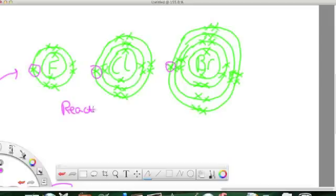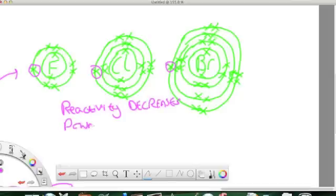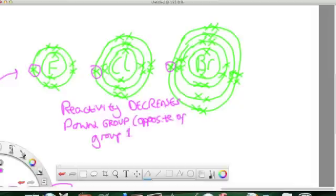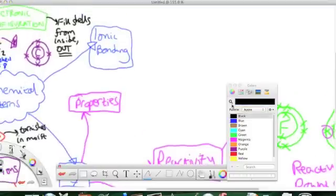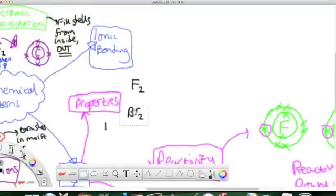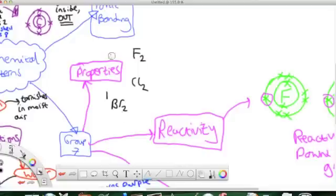However, this time, they're not trying to lose electrons, they're trying to gain electrons, and it's harder to gain electrons when the outer shell is further from the nucleus, because the electrostatic bond is weaker, and therefore, electrons don't join as much. So, it becomes less reactive down the group, as opposed to in group 1. It's opposite.